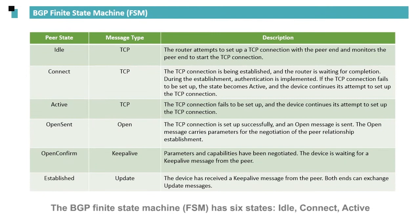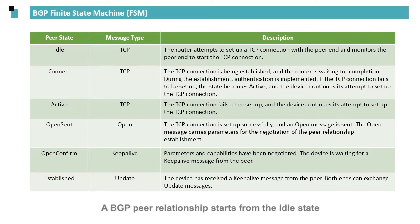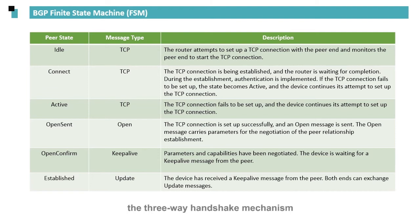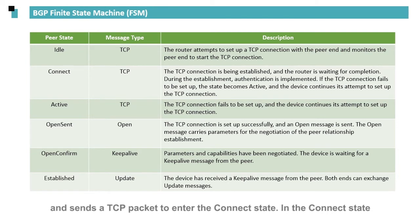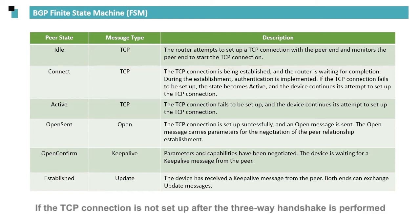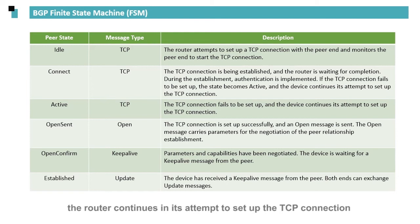The BGP finite state machine, FSM, has six states: Idle, Connect, Active, Open Sent, Open Confirm, and Established. A BGP peer relationship starts from the Idle state. A router attempts to establish a TCP connection with a peer through the three-way handshake mechanism. The router searches the local routing table for a route to the peer and sends a TCP packet to enter the Connect state. In the Connect state, if the TCP connection is not set up after the three-way handshake, the router continues attempting to set up the TCP connection and enters the Active state.